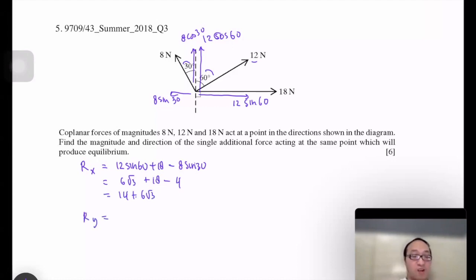And for Ry, we have 8 cos 30 plus 12 cos 60 equals to 4 square root 3 plus 6.